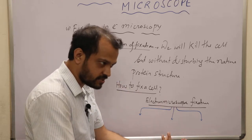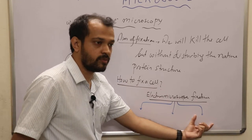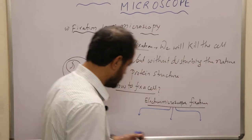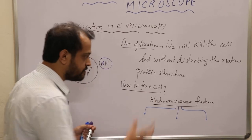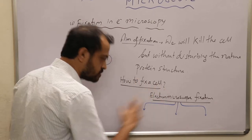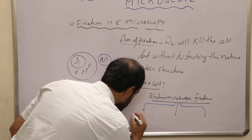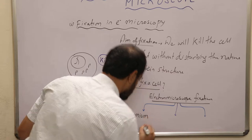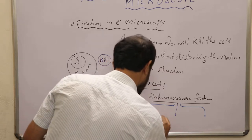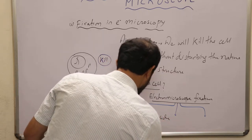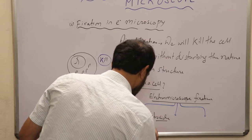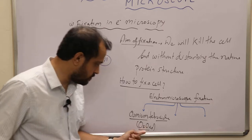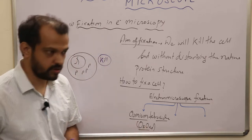Then we'll discuss its updated version, and then we'll talk about the most common one, because the most common is actually the newest one. The most primitive fixative used in electron microscopy is called osmium tetroxide, with a molecular formula of OsO4.